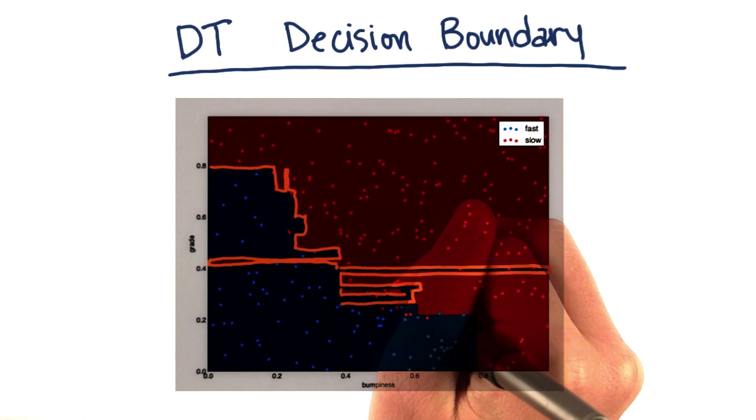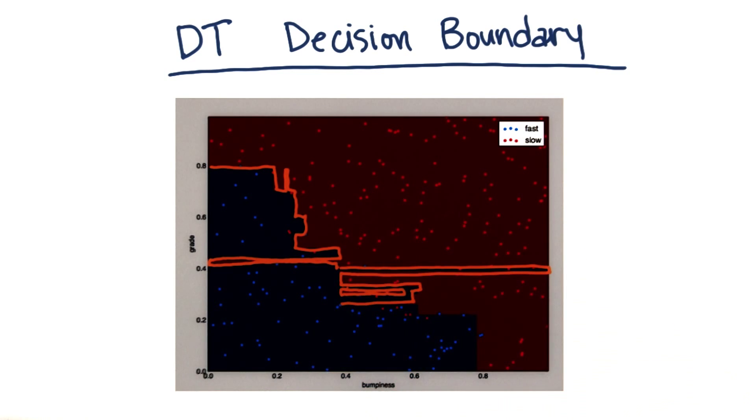You can see that it can also have little islands just like the SVM did. And in general, this is the shape that's going to characterize a decision tree or decision tree boundary.